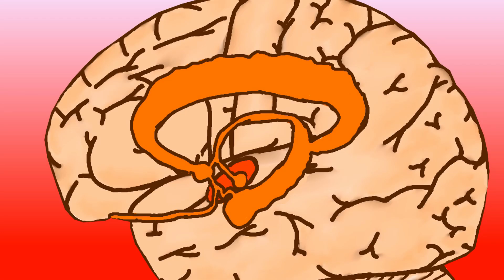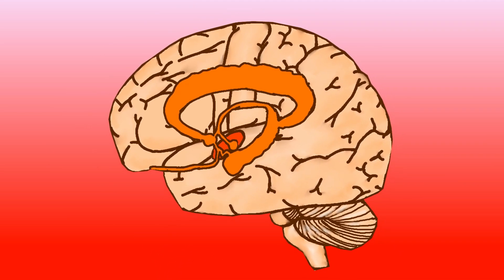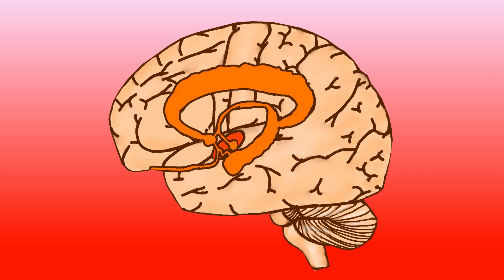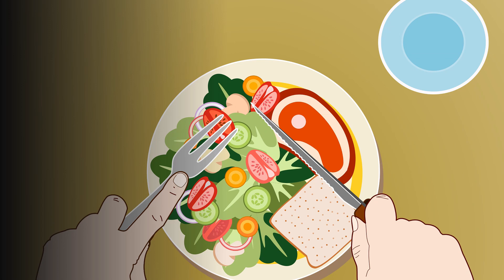The limbic system in our brain is a major part that leads to addiction. This reward system in the brain helps to memorize the things required for our survival and give us pleasure. It also reminds us to repeat the same thing in the future. For example, it is essential to eat food for our survival, and it's our limbic system that reminds us to repeat this action every day.